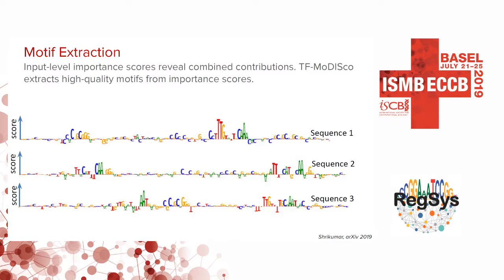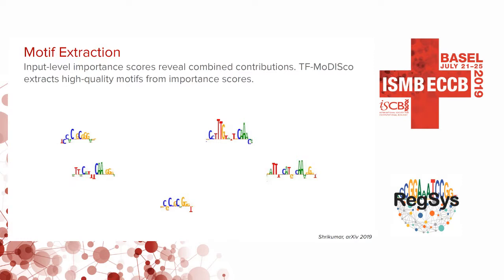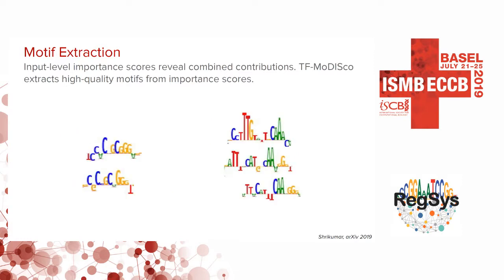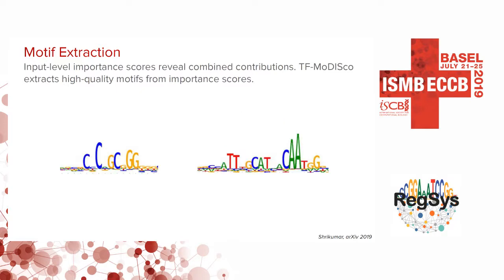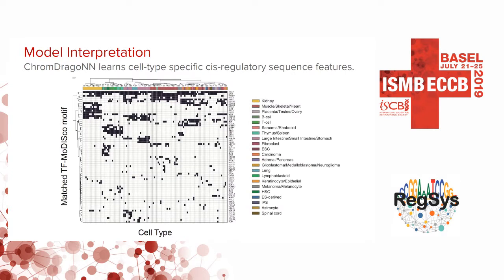TF-MoDISco works by first computing the most important subsequences, then clustering them based on similarity, and consolidating them to output high-quality motifs. We then match these motifs against a database of known motifs to create a matrix of motifs by cell types, revealing that the model learns both non-specific and cell-type-specific cis-regulatory sequence features.